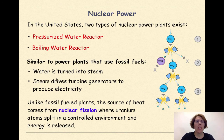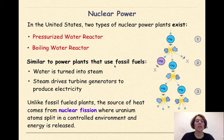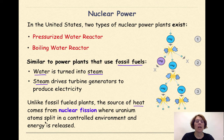Nuclear power. In the United States, two types of nuclear power plants exist: pressurized water reactors and boiling water reactors. Similar to power plants that use fossil fuels, water is turned into steam and steam drives the turbine generators to produce electricity. Unlike fossil-fueled plants, the source of heat comes from nuclear fission, where uranium atoms split in a controlled environment and energy is released.